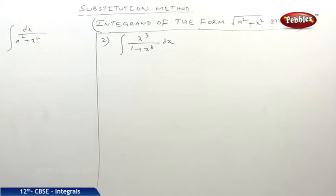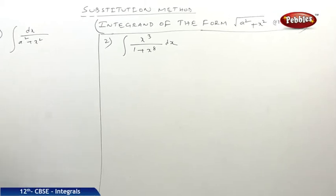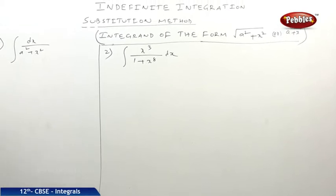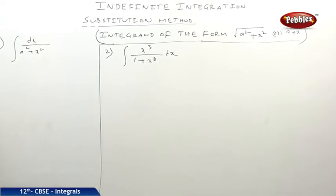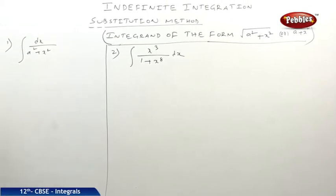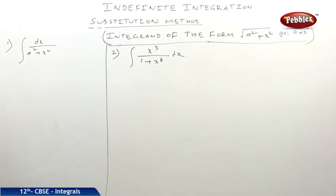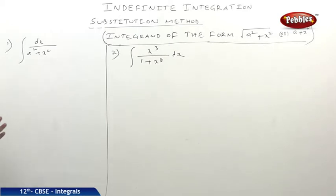In the previous class we have seen integrands of the form under root of a² minus x². Now, under the next category in substitution method, we will be seeing integrands of the form under root of a² plus x² or a² plus x². Whenever this kind of problem comes, put x equal to a tan θ, because we know the formula: sec²θ minus tan²θ equals 1, so sec²θ equals 1 plus tan²θ.